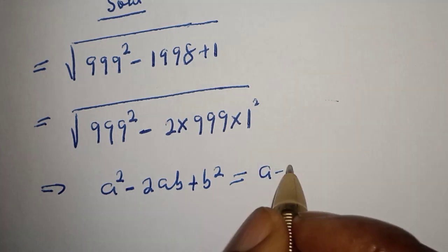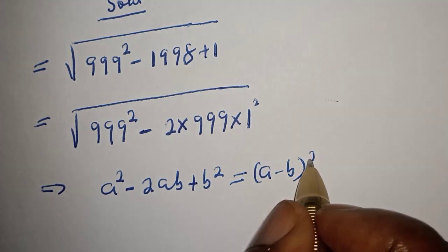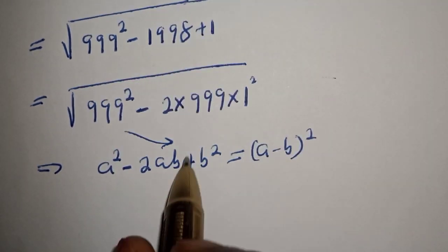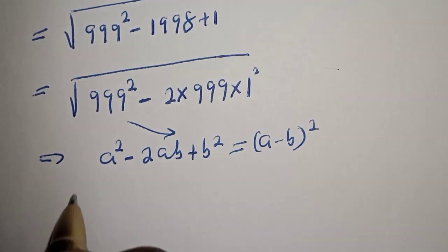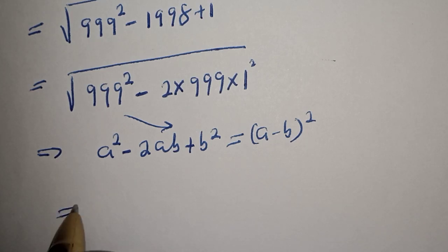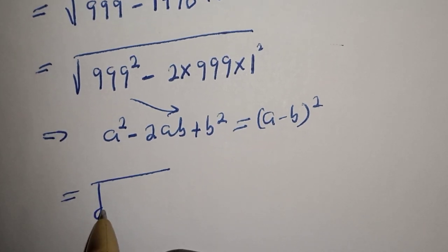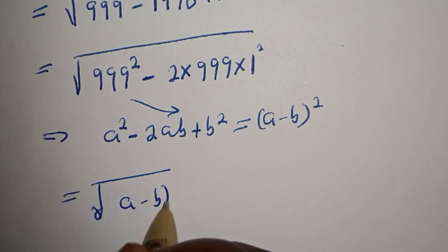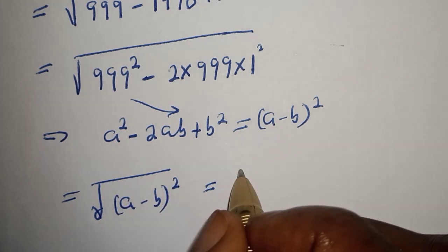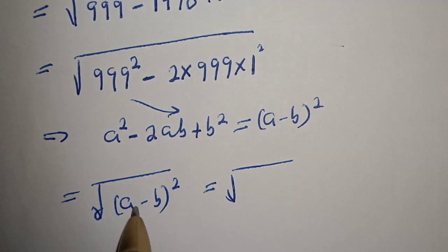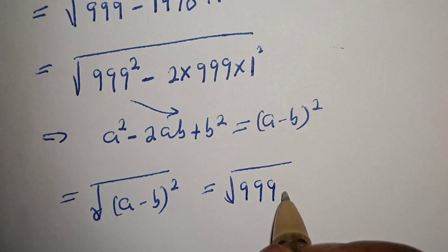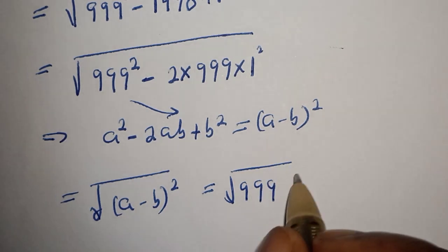Then by comparing, all of these can be written as square root of (a minus b) squared, which is equal to square root of a, where a is 999 and b is 1.